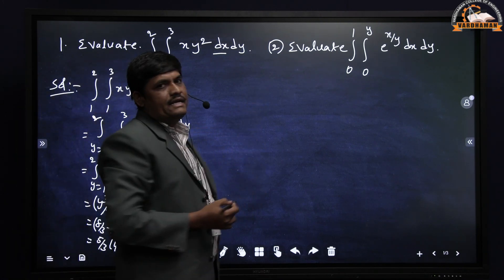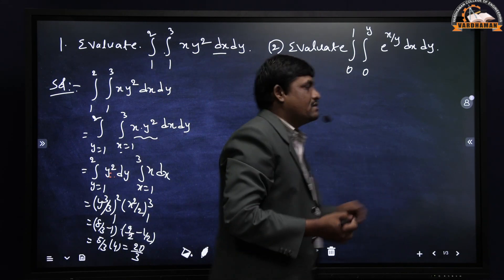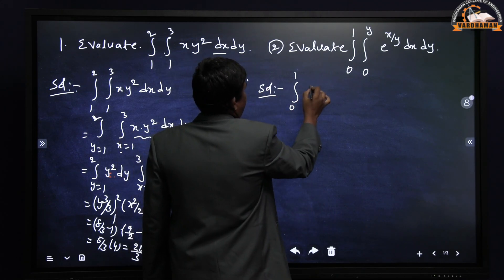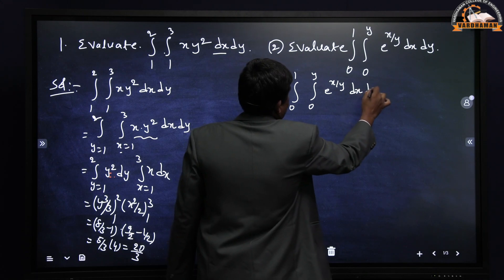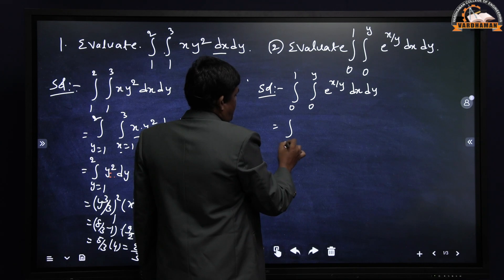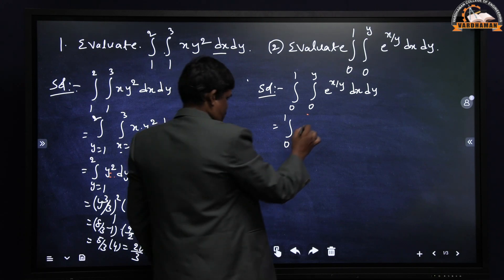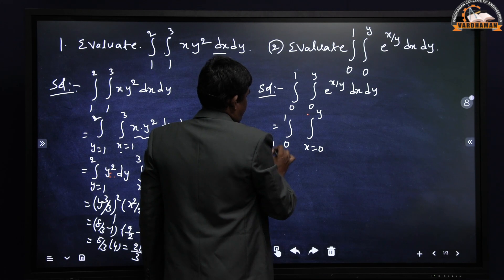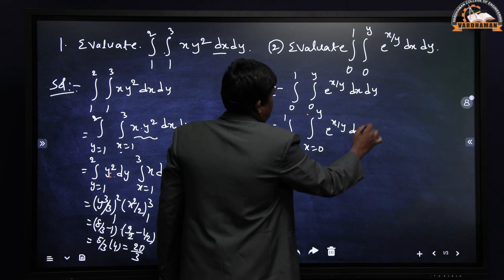Coming to the second problem, deciding the limits is very important. The given integral is from 0 to 1, integral from 0 to y, of e^(x/y) dx dy. We decide: the limit containing a variable (0 to y) is the x limit, so x goes from 0 to y and y goes from 0 to 1.